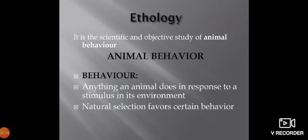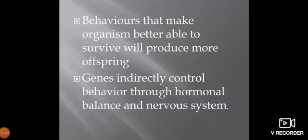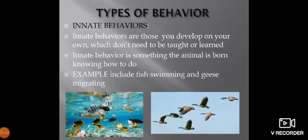Firstly, we will discuss ethology. It is the scientific and objective study of animal behavior. Animal behavior is anything an animal does in response to a stimulus in its environment. Natural selection favors certain behaviors — behaviors that make organisms better able to survive will produce more offspring. Genes indirectly control behavior through hormonal balance and the nervous system.